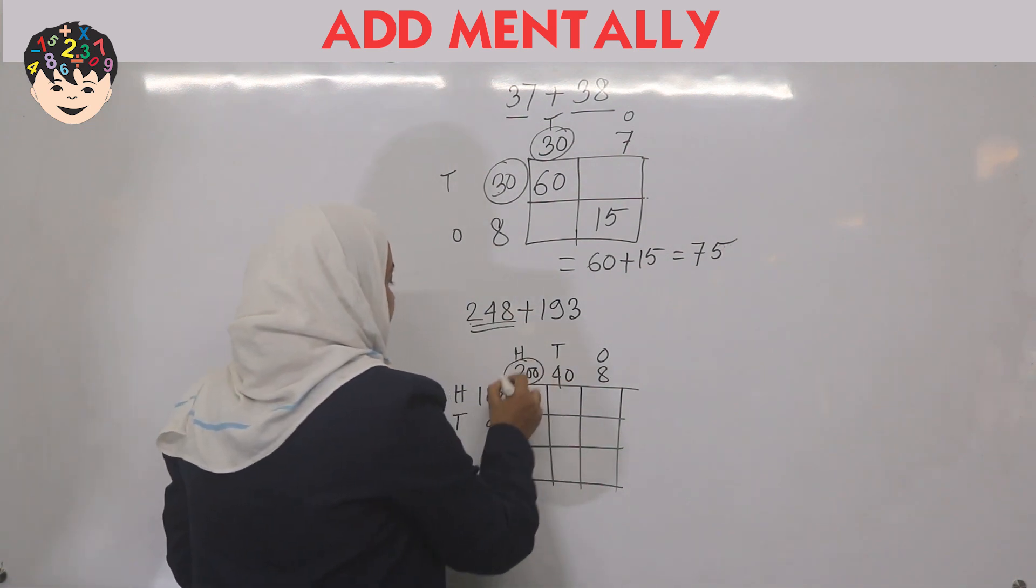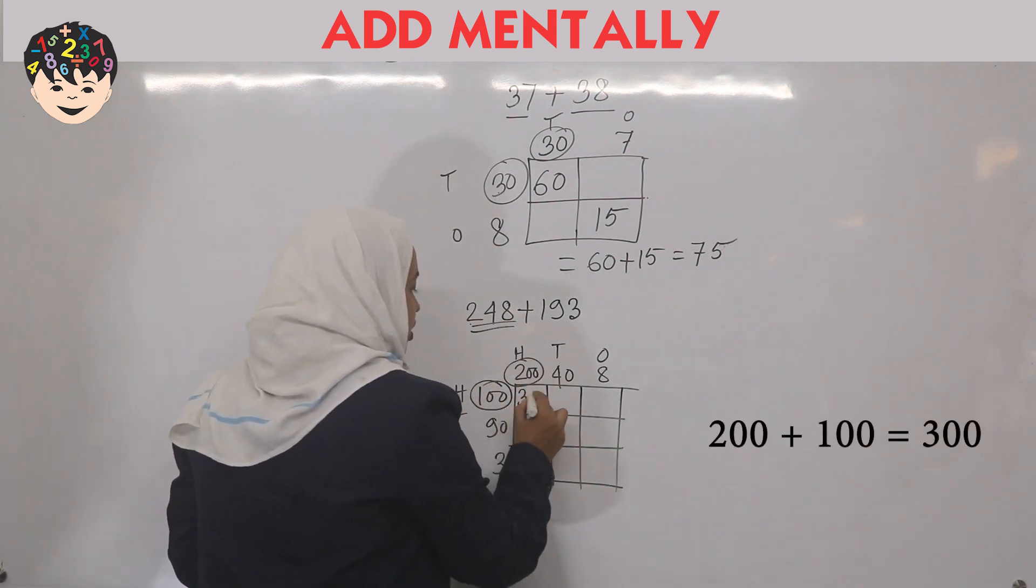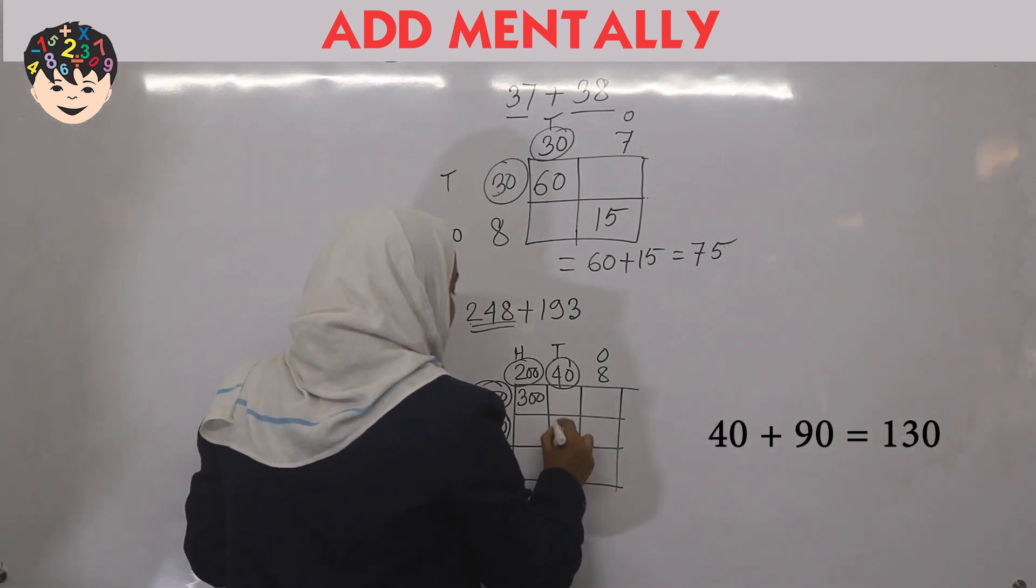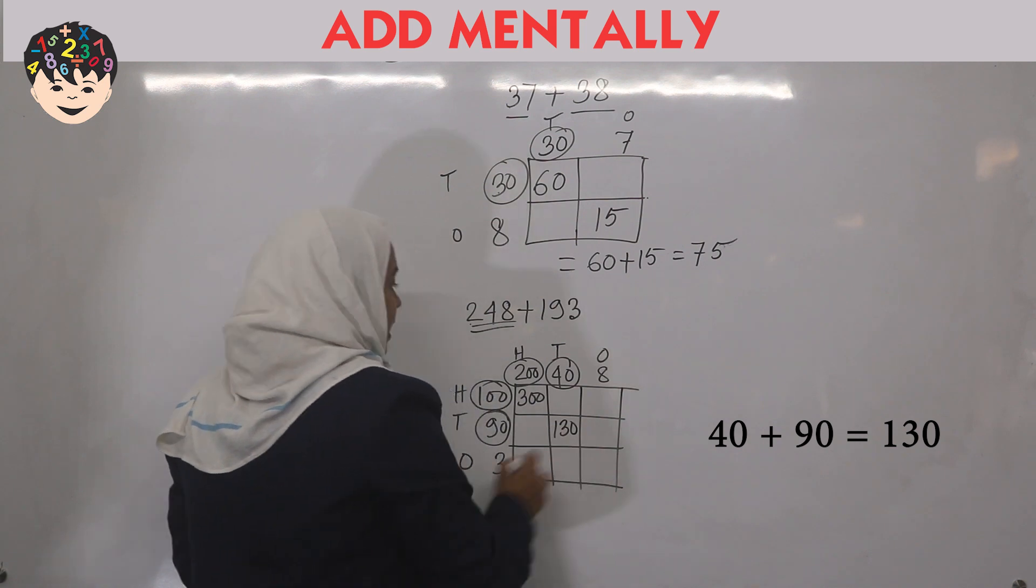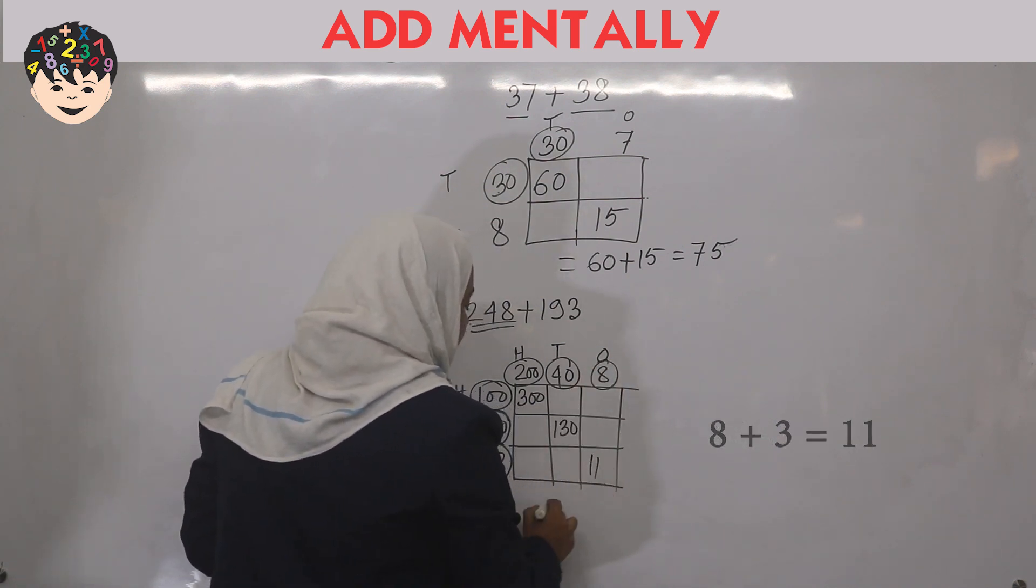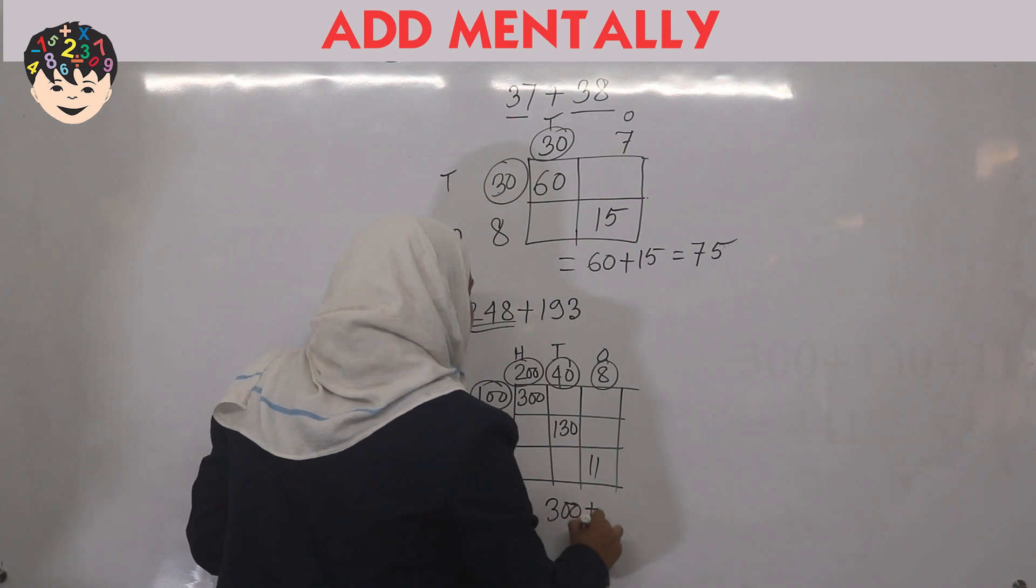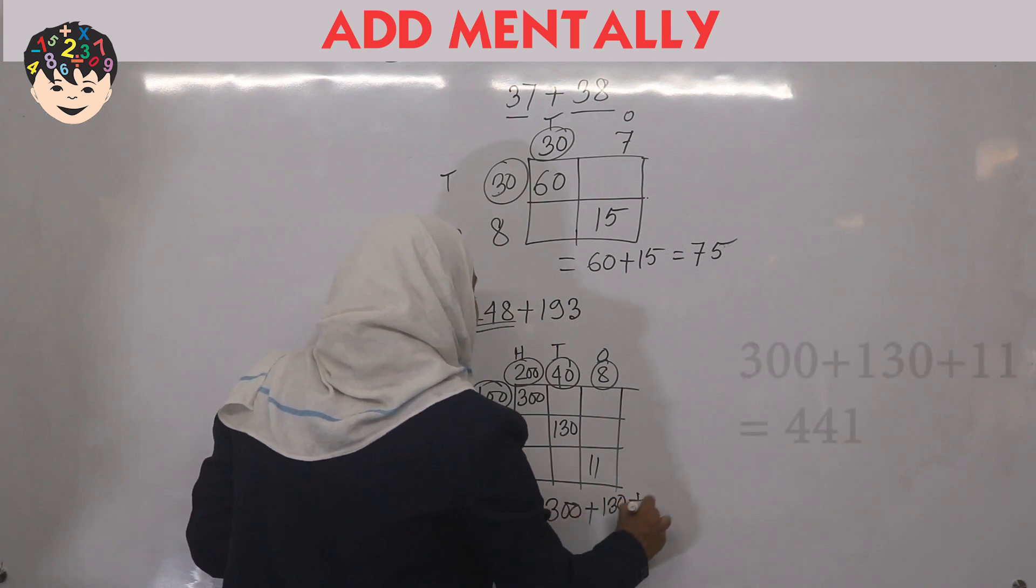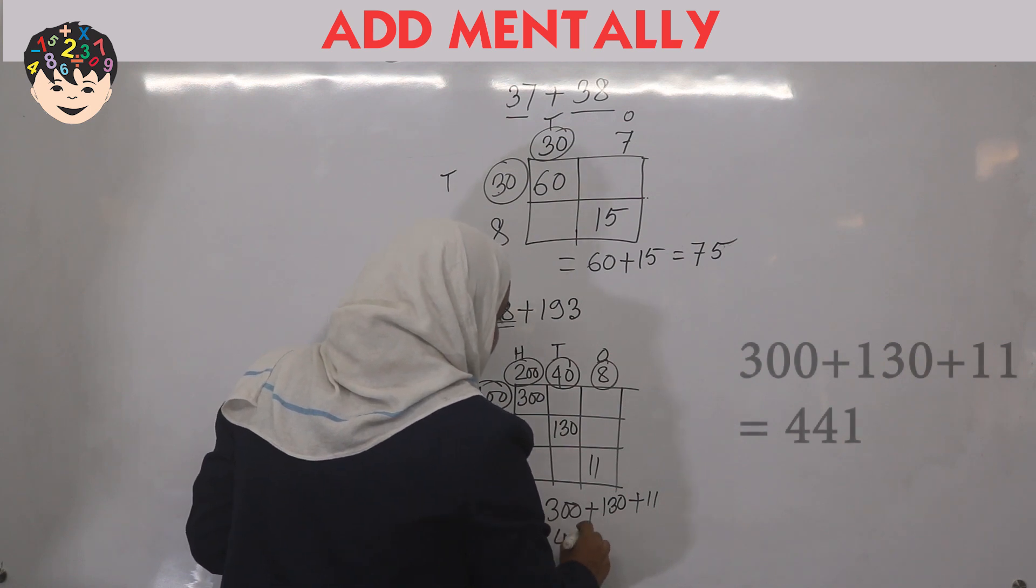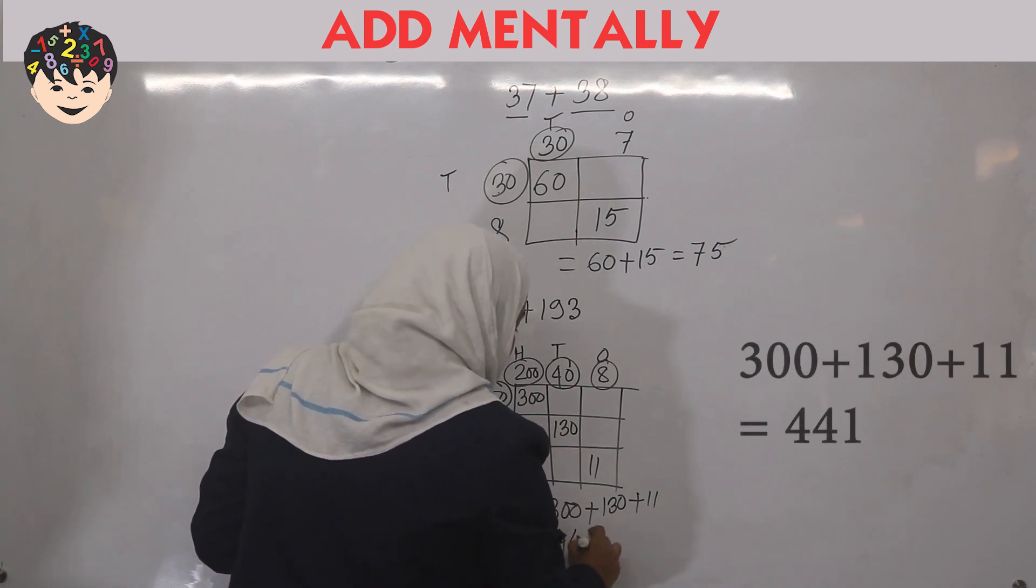So here is two hundred and one hundred is three hundred, and forty and ninety is one hundred thirty, and eight and three is eleven. So three hundred plus one hundred thirty plus eleven is four hundred forty-one.